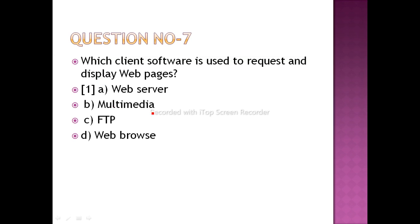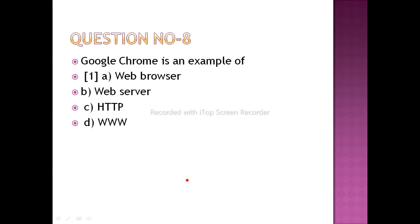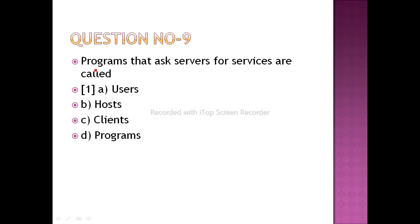Which client software is used to request and display a web page? That will be a web browser. Google Chrome is an example of a web browser. Programs that ask a server for services are called clients. The options were: users, host, client, or program — and the answer is client.